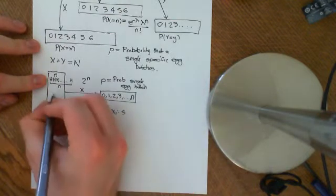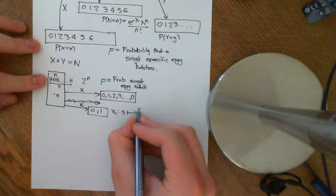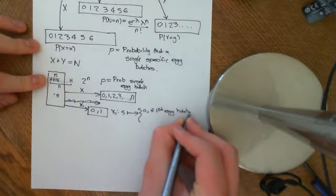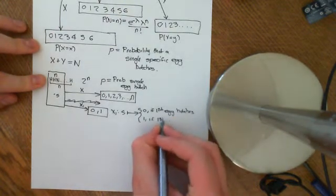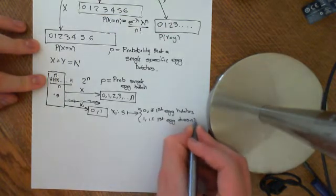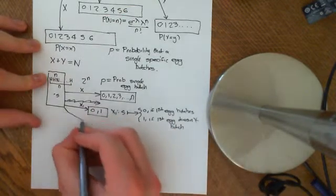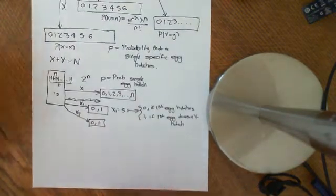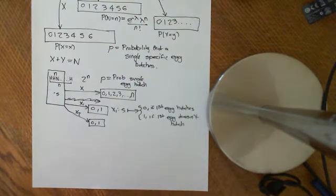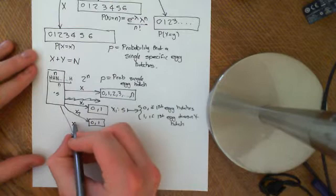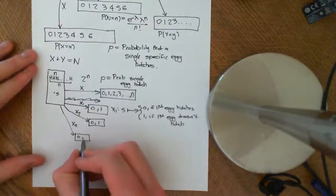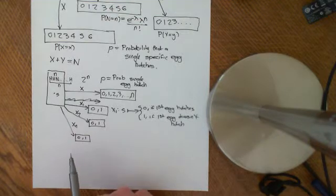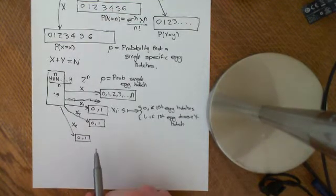Similarly, we set up X2, which maps an outcome to 0 if the second egg doesn't hatch and to 1 if the second egg does hatch. And you can go all the way down to Xn, which maps to 0 if the nth egg doesn't hatch, and to 1 if the nth egg does hatch.